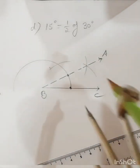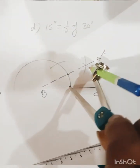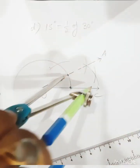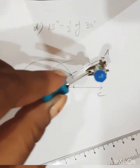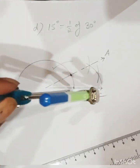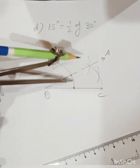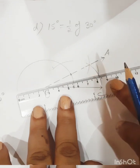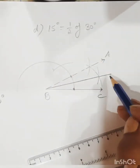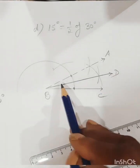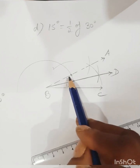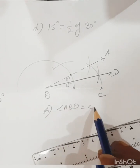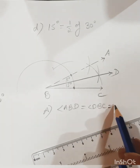By drawing arcs to bisect — keep the compass at one of the 30 degree ray points, draw an arc, then keep the compass at the other point and draw another arc. Now join this point with a proper ray and name it D. This is 15 degrees — by bisecting 30 degrees we have got 15 degrees. Angle ABD equals angle DBC, which is equal to 15 degrees.